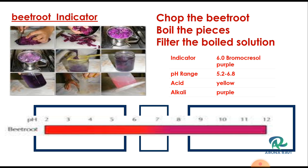In turmeric solution, the acidic medium appears yellow in color and the basic medium turns red. For the Chinese rose indicator, in the acidic medium it appears pink or magenta in color, and in the basic medium it turns green. We can choose one indicator based on the medium — acidic, basic, or neutral.